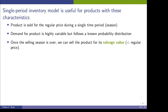And second, the demand for this product is highly variable. However, it follows a known probability distribution. Typically this happens when we have some past sales data that we can use as an approximation.